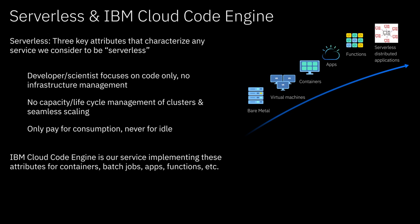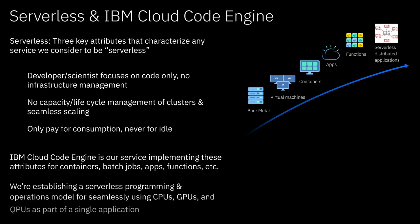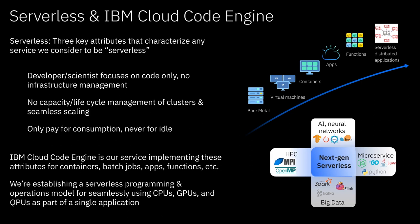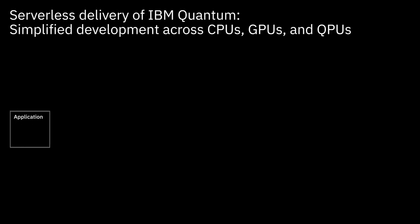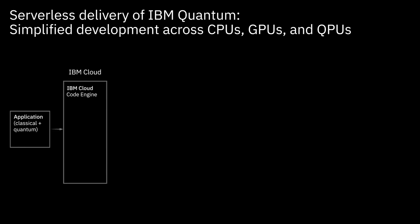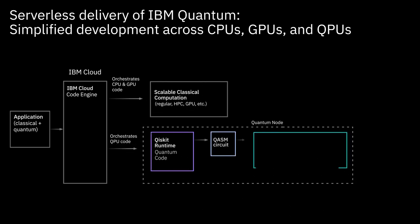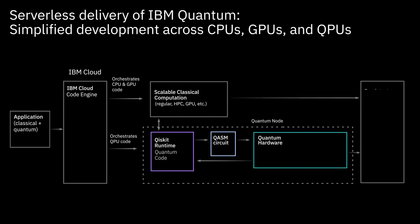What we are doing together with the quantum team is establishing a serverless programming model that allows us to very flexibly combine QPUs, CPUs, and GPUs. From an architectural perspective, we see a quantum application that consists of a quantum part and a classical part. IBM Cloud Code Engine is the component that knows how to delegate quantum logic to the quantum cluster and classical logic to the classical cluster — which can have GPUs or CPUs included. From both, data can be accessed as input for processing or as output of the processing.